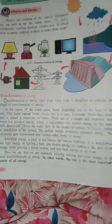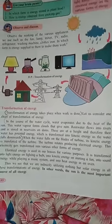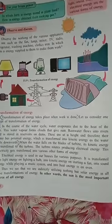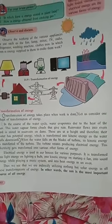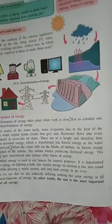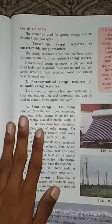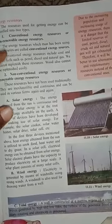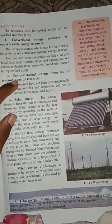So we can see that it is indirectly utilizing nothing but solar energy in all transformation of energy. In other words, the sun is the most important source of all energy. The resources used for getting energy can be classified into two types: conventional and non-conventional.